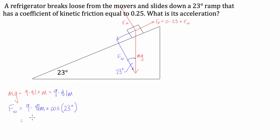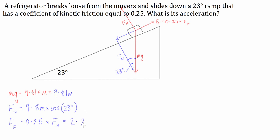We find out the normal force in terms of mass. We don't really need that value directly, because what we're trying to work out is the force of friction. The force of friction is going to be equal to the coefficient of kinetic friction multiplied by this normal force, and what we get is a force of friction equal to 2.26m newtons.